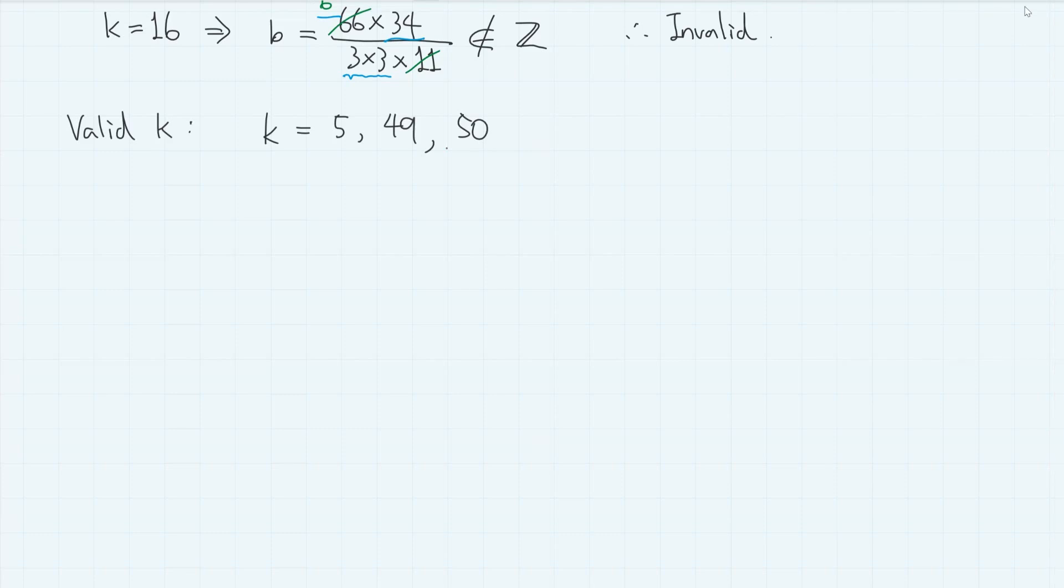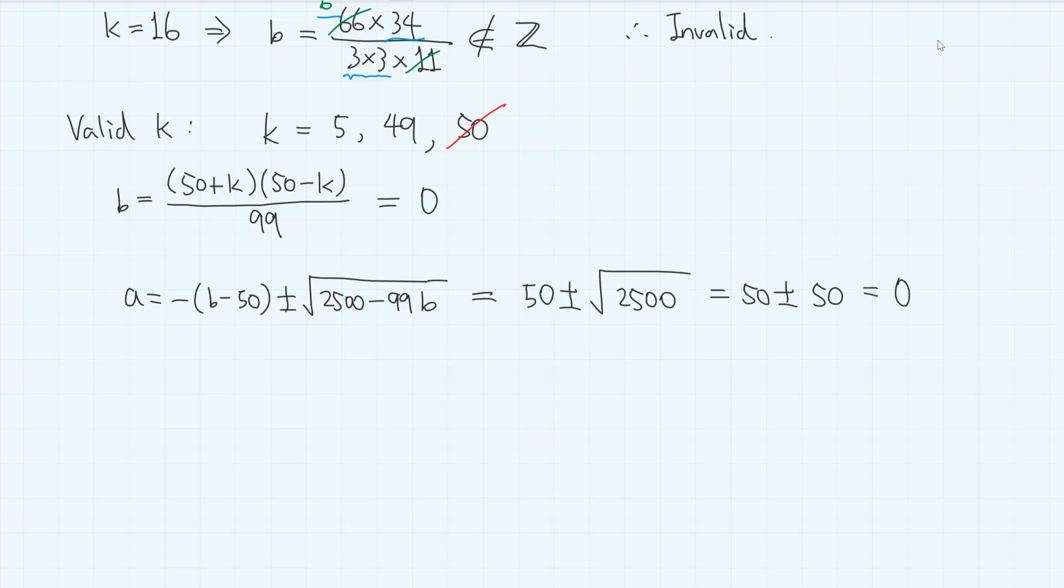But we can also rule out k equals 50. Because it simply gives b equals 0. And thus, a equals 50 plus minus square root of 2500. So 50 plus minus 50, which is 0 or 100, which are both invalid cases.